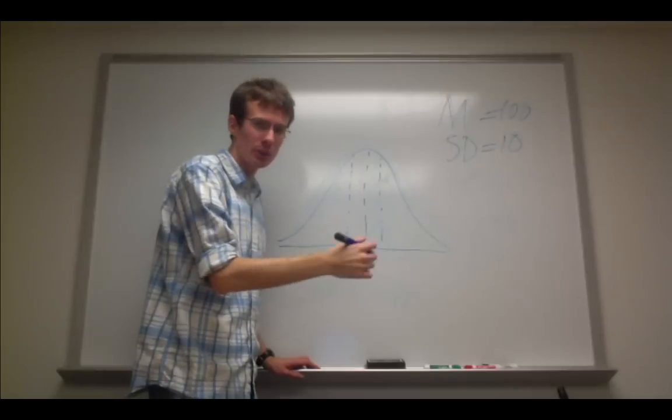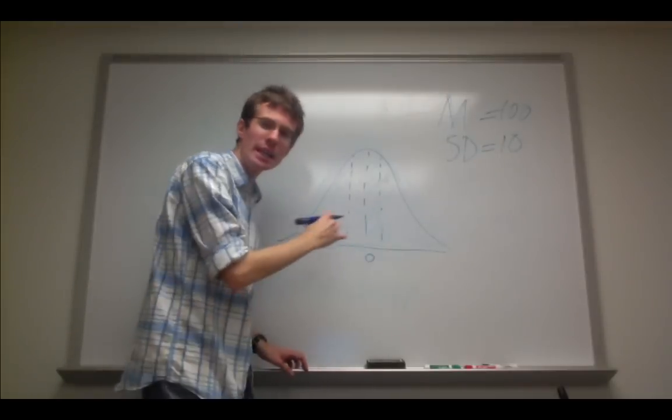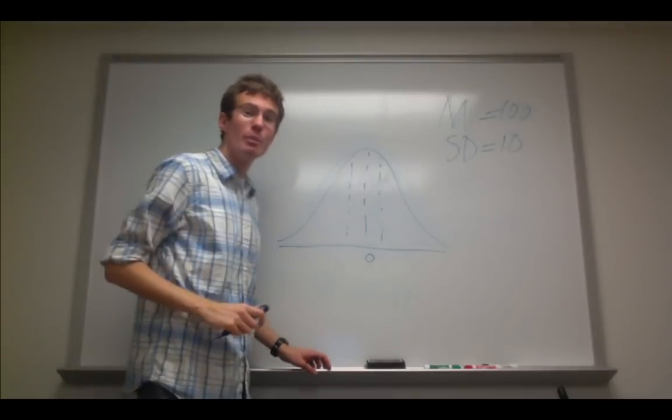The middle 38%, simply 38 divided by 2, and you assign each half to each side of the mean.